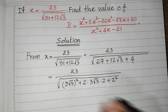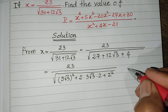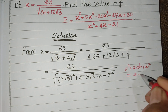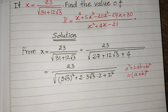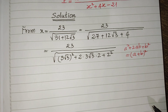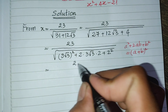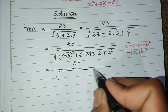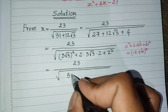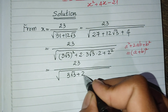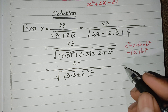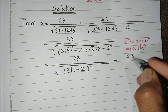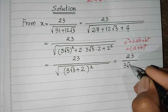Using the perfect square formula a squared plus 2ab plus b squared, we recognize that 27 plus 12 square root 3 plus 4 equals the square of 3 square root 3 plus 2. So now h equals 23 divided by the square root of 3 square root 3 plus 2, all squared, which simplifies to 23 divided by 3 square root 3 plus 2.